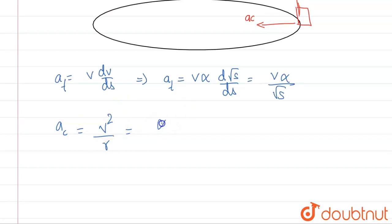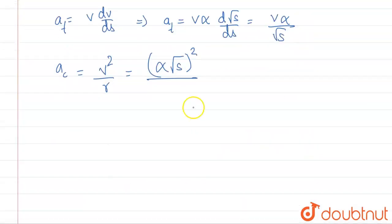So v is alpha root s squared divided by r, or we can use r to display the radius. This will equal alpha squared s divided by r. We have everything now.